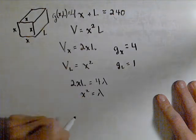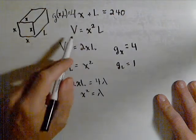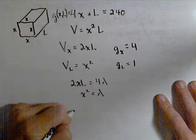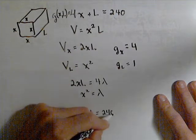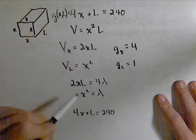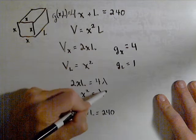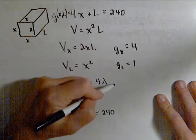We actually already have lambda in this one which makes it a little bit easier for us. And our final constraint is that we know that 4x plus L must equal 240. A lot of different ways we can solve this but this guy's already solved for lambda so let's just plug that in there and see what happens.